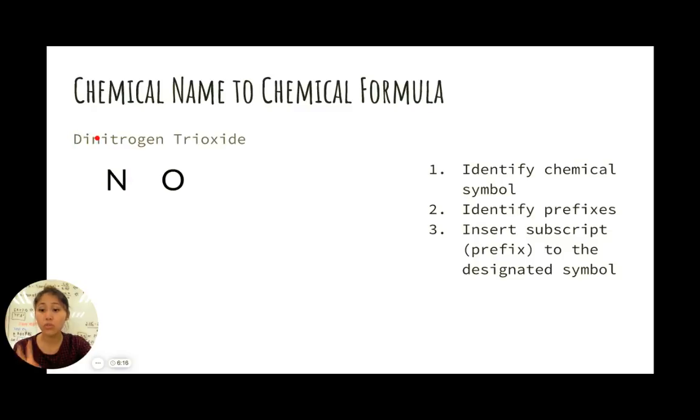Dinitrogen means that there are two nitrogen atoms. Tri oxygen means that there are three oxygen atoms. So we assign two to nitrogen and we assign three to oxygen. And that's it for converting from chemical name to chemical formula in covalent bonds. Super easy.